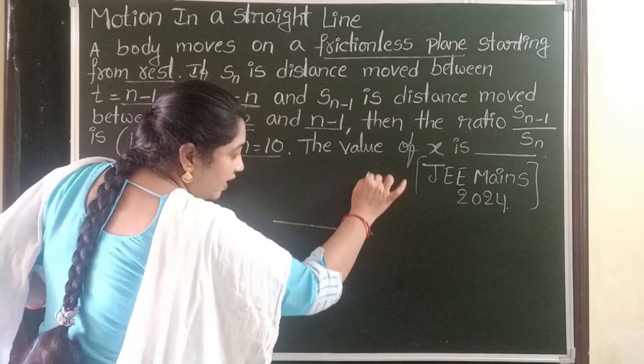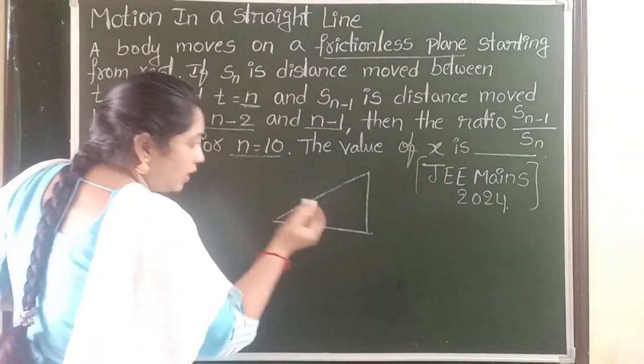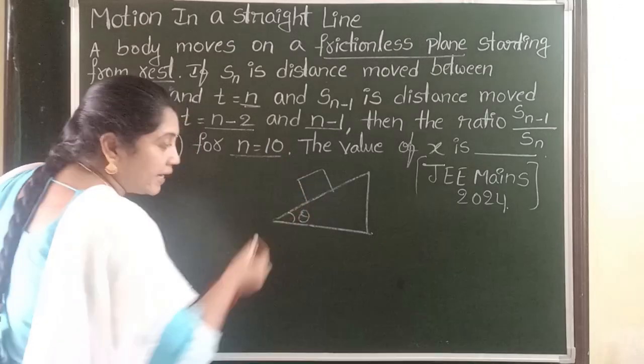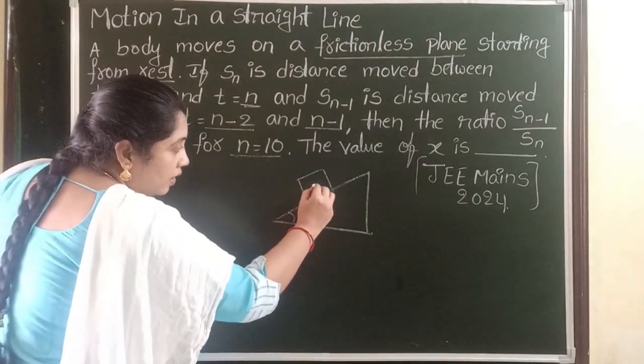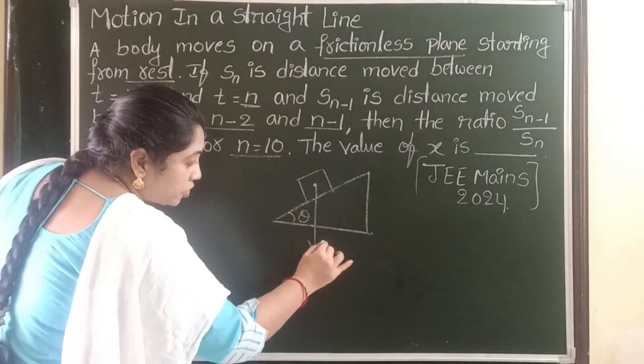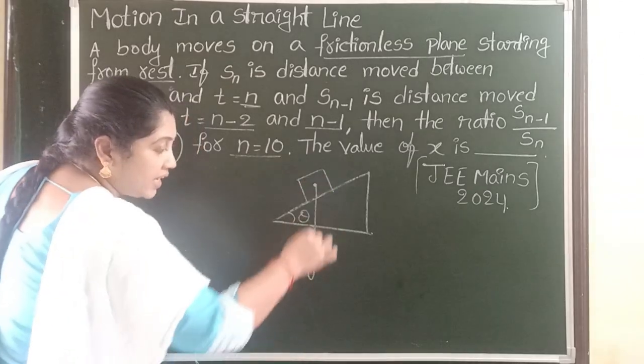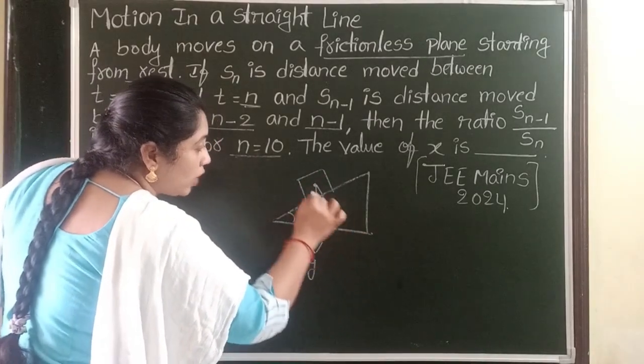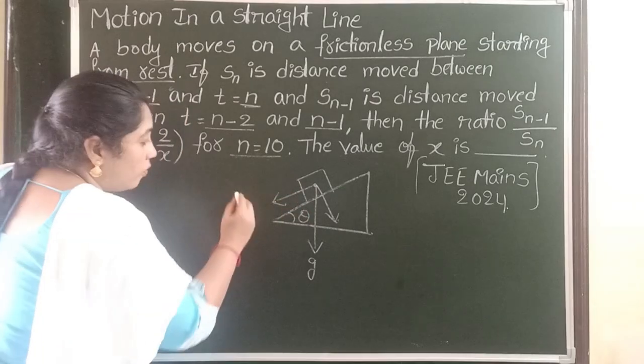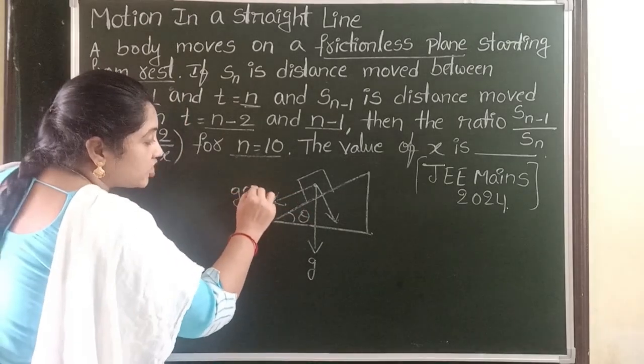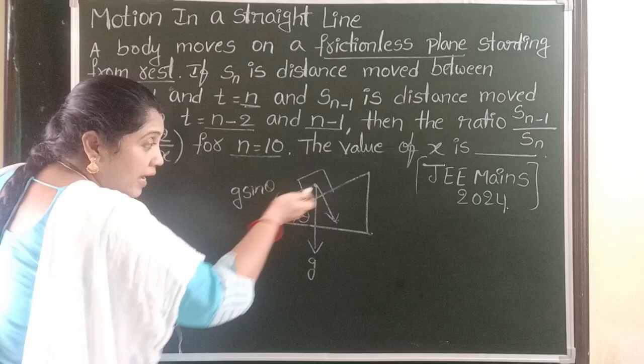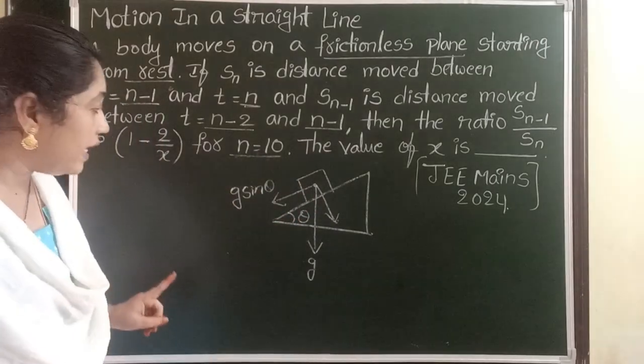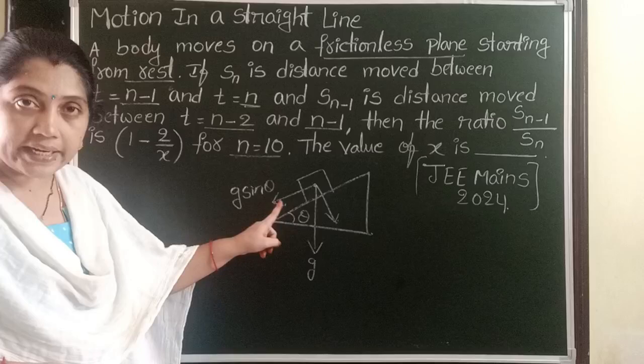Let us take an inclined plane and body is placed on the inclined plane. Let theta be the angle of inclination. Here acceleration due to gravity is acting vertically downward direction. This G is resolved into two components. One of the components, that is G sine theta, acting along the inclined plane in downward direction. So here acceleration equals G sine theta.